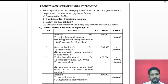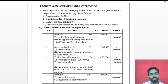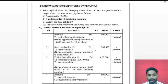Journal entry on application: Bank Account debit rupees 2 lakh, to Equity Share Application Account credit rupees 2 lakh — being application money received on 10,000 shares at rupees 20 per share. Next entry: Equity Share Application Account debit rupees 2 lakh, to Share Capital Account credit rupees 2 lakh — being application money transferred to share capital account.